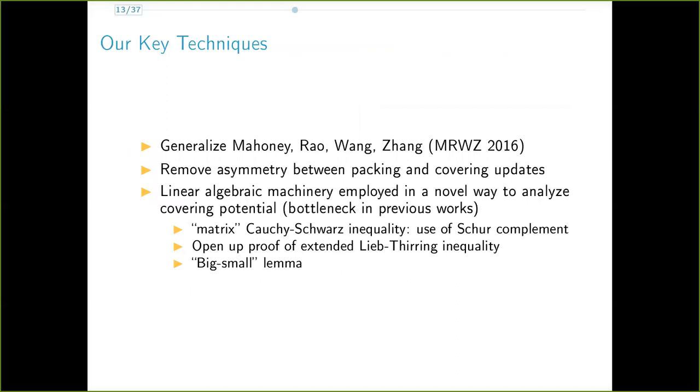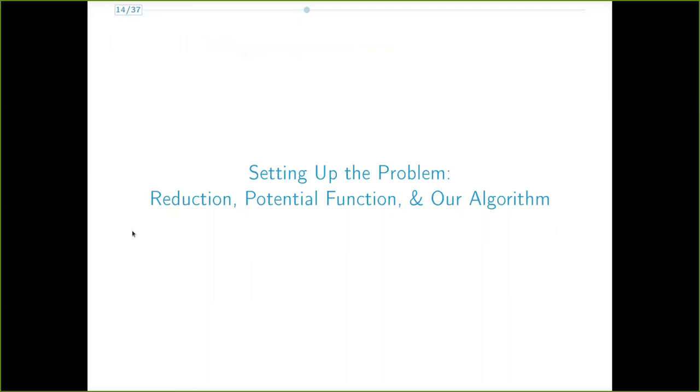At a high level, our key technique is to modify and generalize the work of MIWZ16 by removing an asymmetry in their algorithm and using linear algebraic ideas in a novel way. Some of these ideas include the heavy use of Schur complement, for example, to prove a matrix version of the Cauchy-Schwarz inequality, opening up the proof of the extended Lieb-Turing inequality, and an analysis of different buckets of eigenspaces using what we call the big-small lemma.